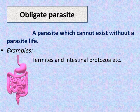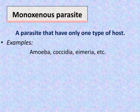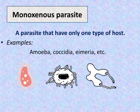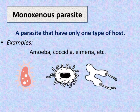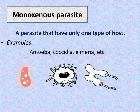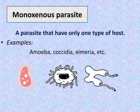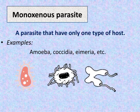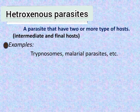Obligate parasites cannot exist without a parasitic life. Examples include termites and intestinal protozoa. Monoxenous parasites have only one type of host — examples include Amoeba, Coccidia, and Eimeria.